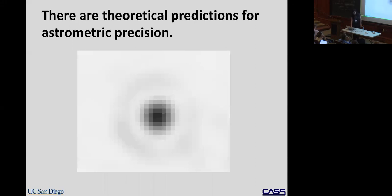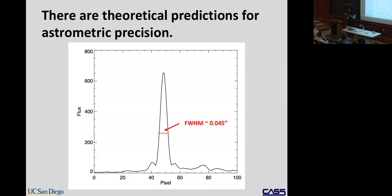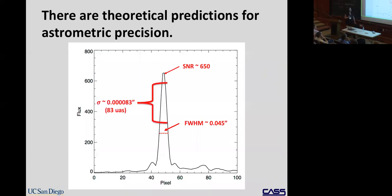Coming back to our example: we measure the FWHM from a one-dimensional cut through the star. We see a nice peak — the brightest part actually split between two pixels, which is typical. The FWHM is roughly 0.045 arc seconds, very close to the diffraction limit at K-band 2.2 microns. Using a peak SNR of about 650, plugging into the equation gives a theoretical astrometric precision of 0.00083 arc seconds — 83 micro arc seconds, or 0.008 pixels.